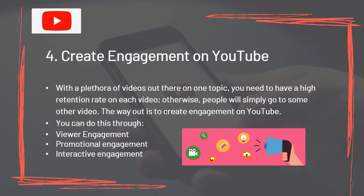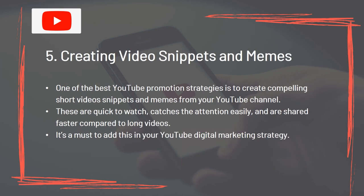Create engagement on YouTube. With a plethora of videos out there on one topic, you need to have a high retention rate on each video. Otherwise, people will simply go to some other video. The way out is to create engagement on YouTube through video engagement, promotional engagement, and interactive engagement. Creating video snippets and memes is one of the best YouTube promotion strategies – create compelling short video snippets and memes from your YouTube channel. These are quick to watch, catch the attention easily, and are shared faster compared to long videos. It's a must to add this in your YouTube digital marketing strategy.